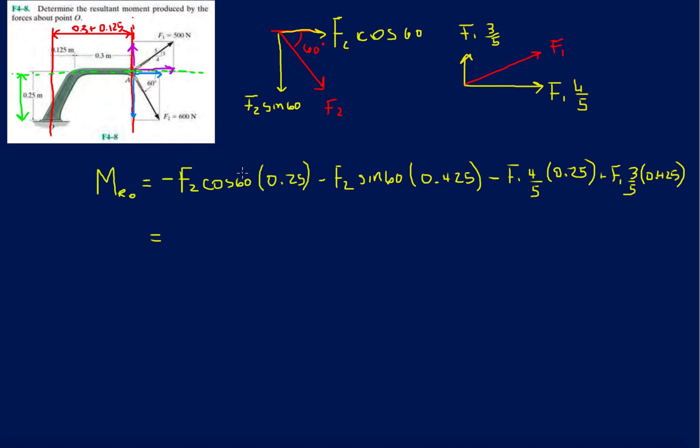So now plug in the values of F2 and F1 here. So we have 600 times cosine 60 times 0.25, I'll just write them out, so minus 75. 600 times sine 60 times 0.425, so that's minus 221. And minus F1 is 500 times 4 divided by 5 times 0.25.